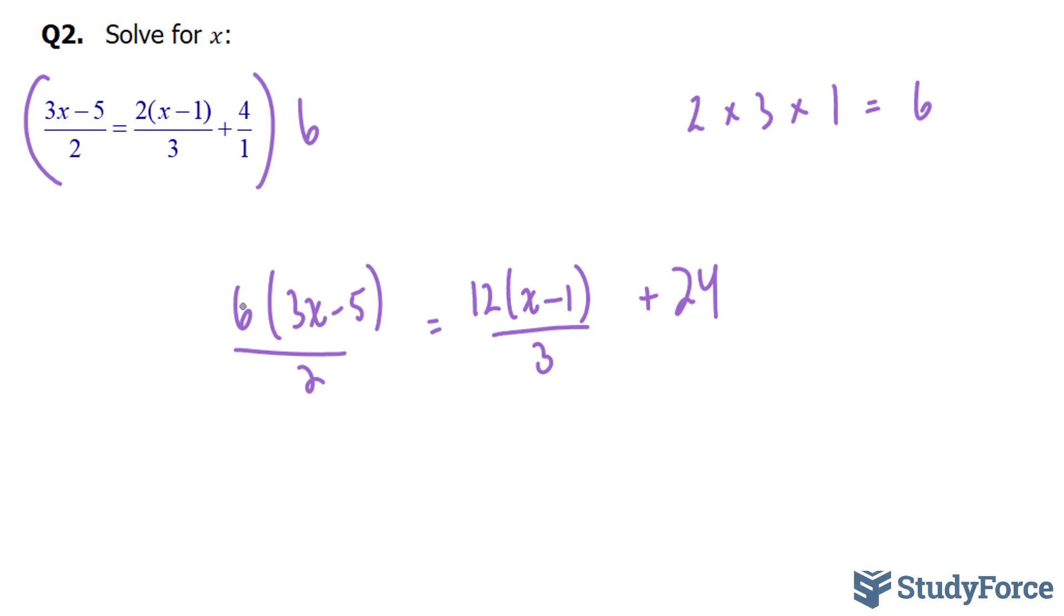Now, this 6 and this 2 will divide. And if they divide, 6 divided by 2 is 3. So I'm going to replace this 6 and this 2 with simply a 3. Now this 12 and this 3 also divide. So I'm going to erase them out. They divide and it becomes a 4.